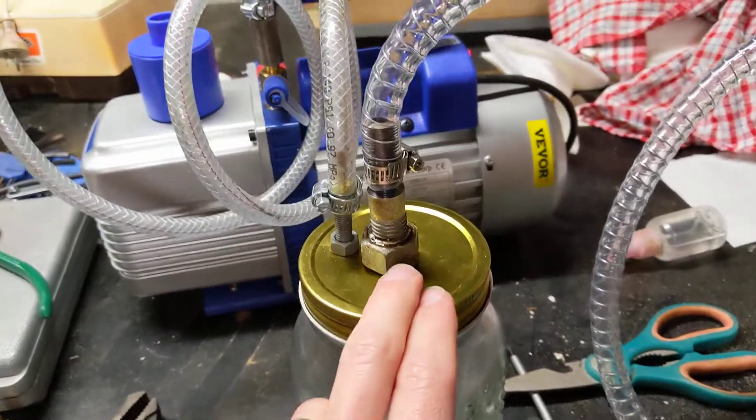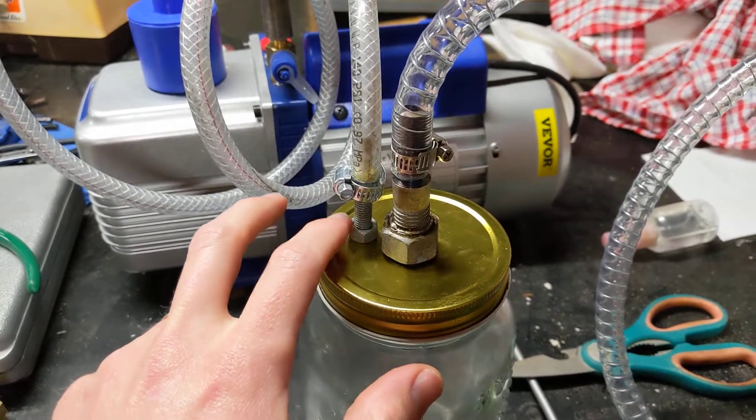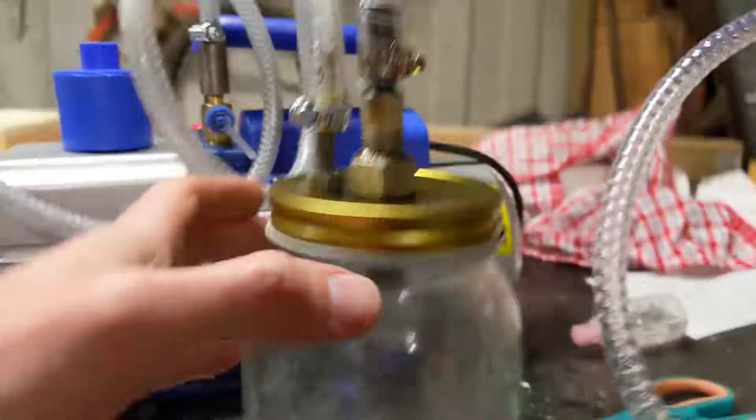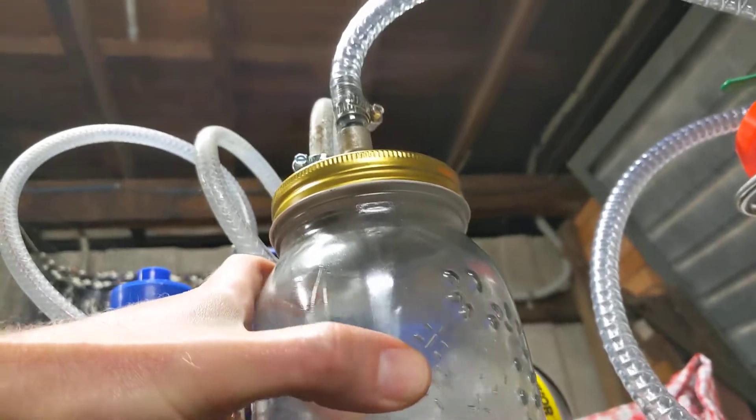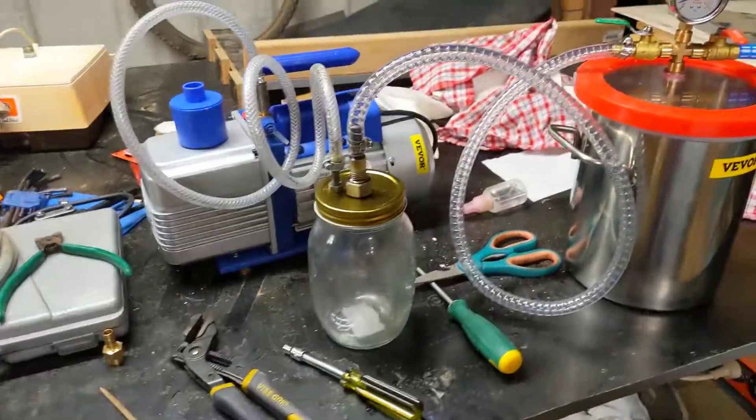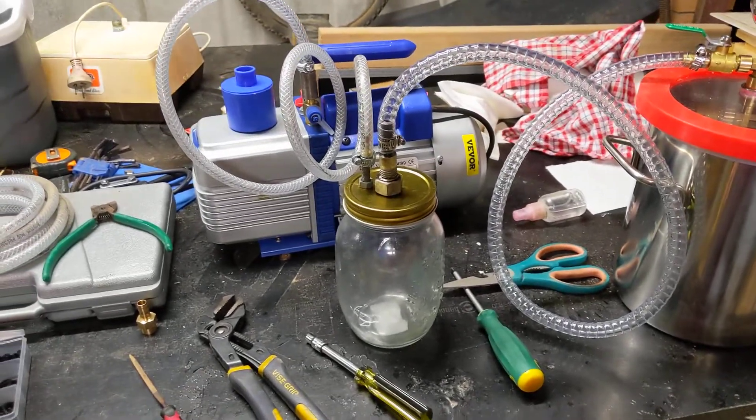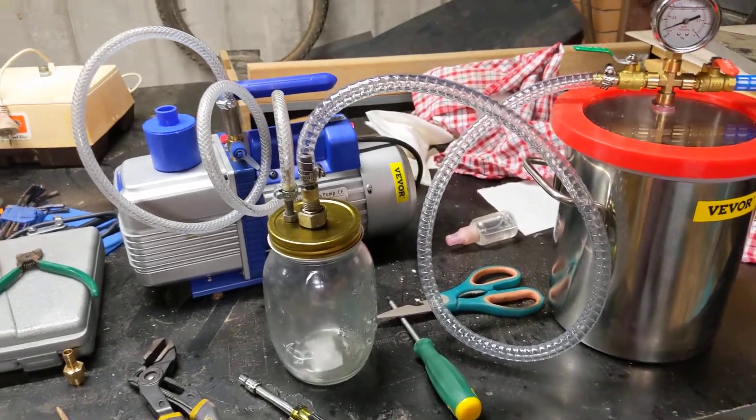So this one here is soldered on. That one's just got an O-ring on the other side. So on the inside here, you can't really see, but there's an M16 nut on the other side of that one. And I turned flat faces on all the nuts and everything, so there's a nice either metal-to-metal or rubber-to-metal or rubber-to-rubber seal.